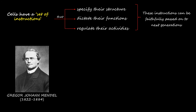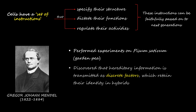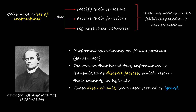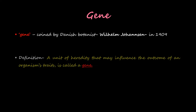Gregor Mendel, the father of genetics, performed experiments on Pisum sativum, that is the garden pea. He discovered that hereditary information is transmitted as discrete factors which retain their identity in hybrids. These distinct units were later termed as genes.